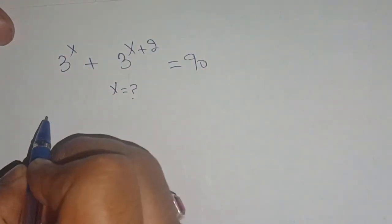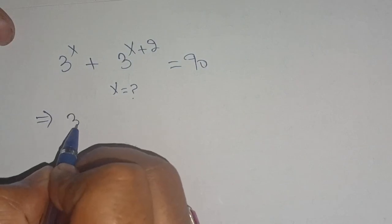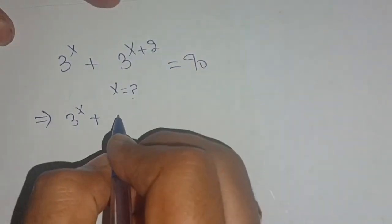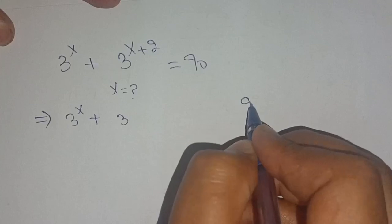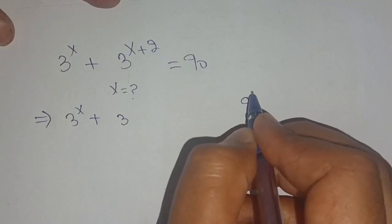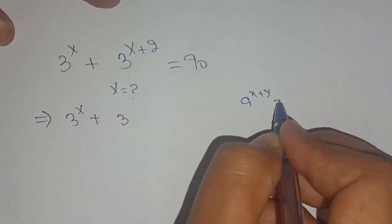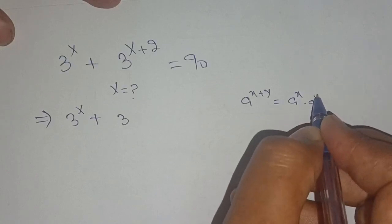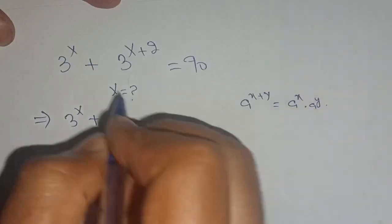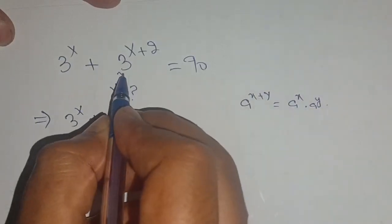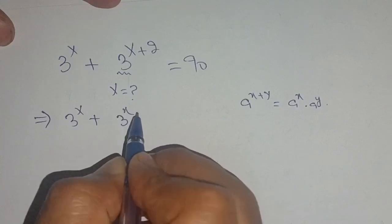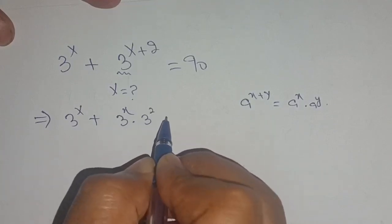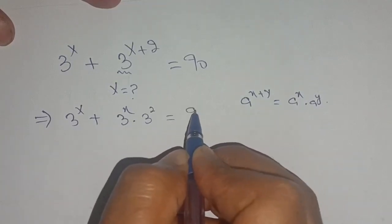Let us solve this. We can write it as 3 raised to power x plus 3 raised to power... We know that a raised to power x plus y is equal to a raised to power x times a raised to power y. We use this identity on this term and get 3 raised to power x times 3 raised to power 2 is equal to 90.